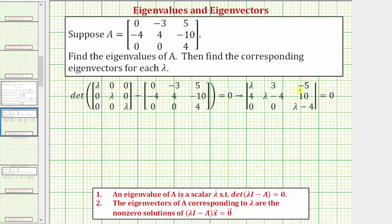To evaluate this determinant, we'll use expansion by minors of the cofactor method using row one. Starting with the first element in row one, we have lambda times the determinant formed by eliminating row one, column one — so we'd have lambda minus four, ten, zero, and lambda minus four. And we have minus the next element in row one, which is three.